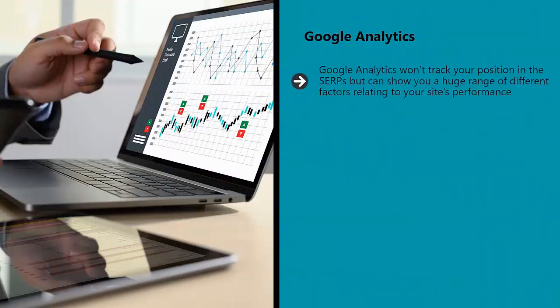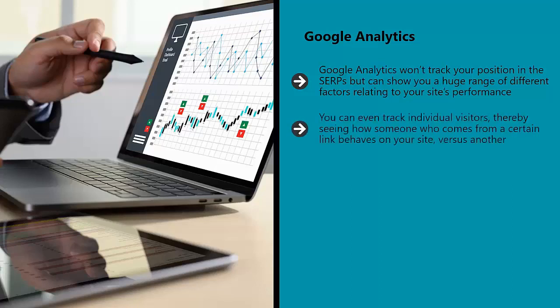Google Analytics won't track your position in the SERPs but can show you a huge range of different factors relating to your site's performance. These include things such as CTR, bounce rates, and more. You can view this information as trends over time or see it displayed on a per-day basis. You can even track individual visitors, thereby seeing how someone who comes from a certain link behaves on your site versus another. This would, in theory, allow you to create lots of different split tests on the fly simply by dividing your data into categories and comparing.